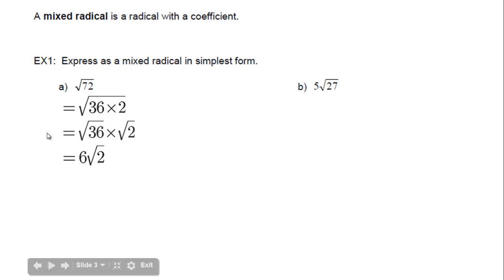What this enables us to do is if we had √72 in a problem, we could take now 6√2, we could take other √2s and add them to it. We can combine like terms. That's called a radical with a coefficient. That's a mixed radical, a radical with a coefficient.